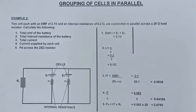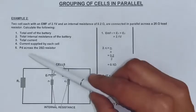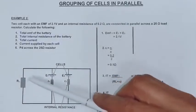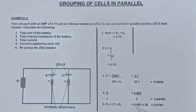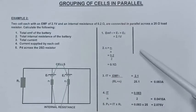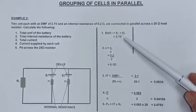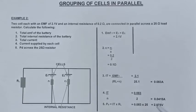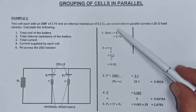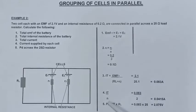Last but not least, I am going to calculate my potential difference across the 25 ohm resistor. That is 0.083 multiplied by 25, which gives me 2.075 volts. There I can clearly see I have a difference between my EMF and my potential difference, as it should be, because EMF is bigger than potential difference.